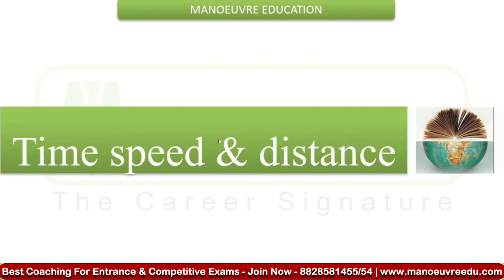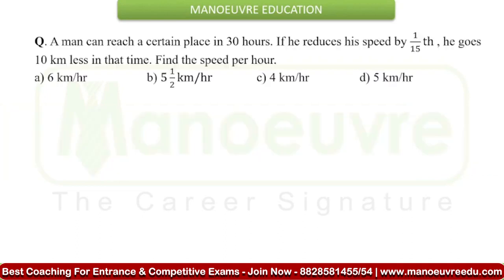Hello everyone, welcome to Manwar Education. Here I am with Quant Kajo's Exalros, and today we will solve a question from time, speed and distance. A man can reach a certain place in 30 hours. If he reduces his speed by 1/15th, he goes 10 km less in that time. Find the speed per hour.